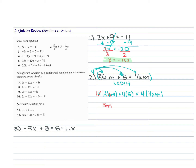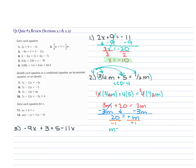Then you have 4 times 5, which is 20. And 4 times one-half M — the 2 becomes 1 and the 4 becomes 2, so that's 2M. From here, we want M by itself, so that 3M has to move to the other side. We subtract 3M from each side. 2M minus 3M is negative M. So that gives us 20 is equal to negative M. Divide each side by negative 1, and M is equal to 20 divided by negative 1, which is negative 20.